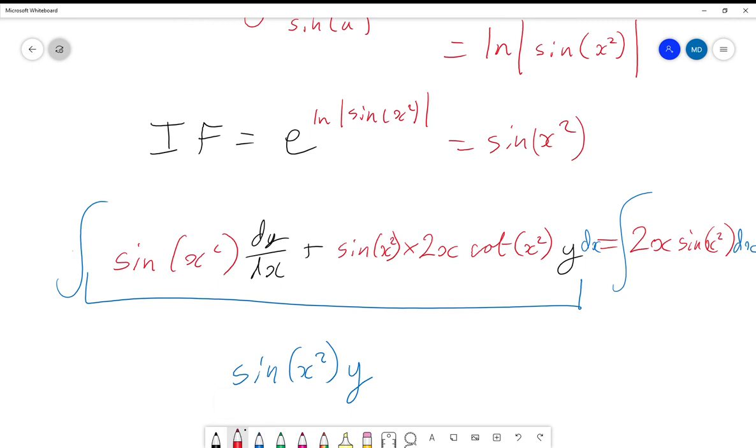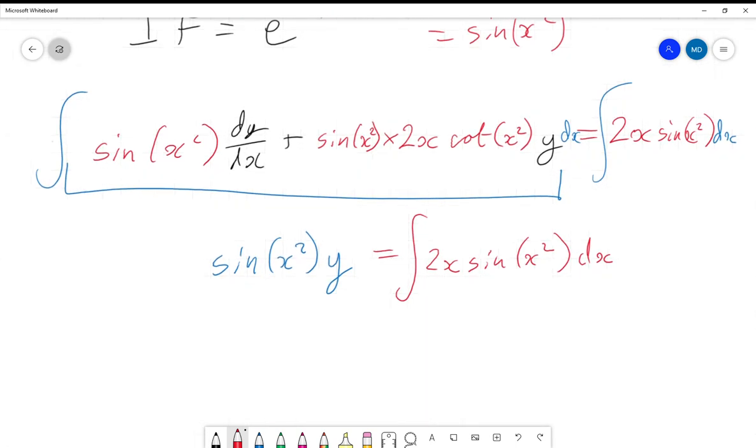So that just leaves us with sin(x²)y = ∫2x sin(x²)dx, but by doing another u substitution or reverse chain rule, our u substitution will be u = x² again, we will find that the right hand side will integrate to just -cos(x²) + C.